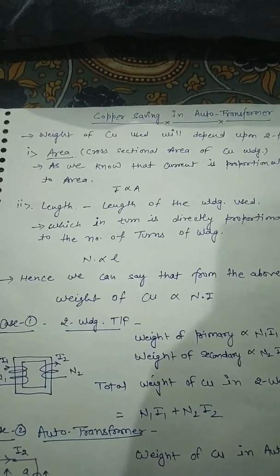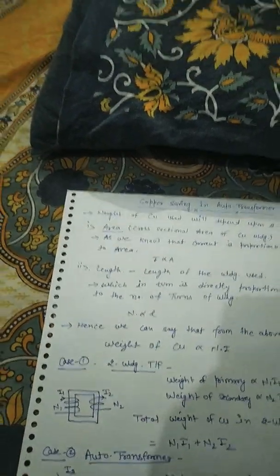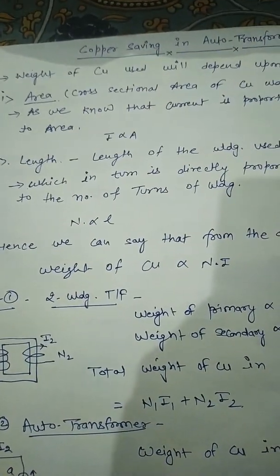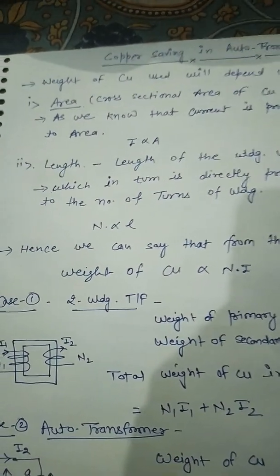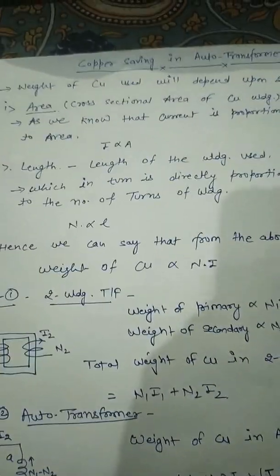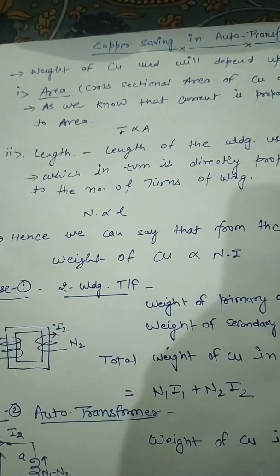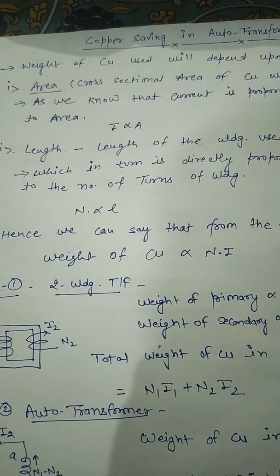The second factor is length, which is directly dependent upon the number of turns of the copper winding. As the length of the copper winding increases, the number of turns increases. So weight is directly proportional to the number of turns. Taking both factors together, weight is directly proportional to the product of current and number of turns.